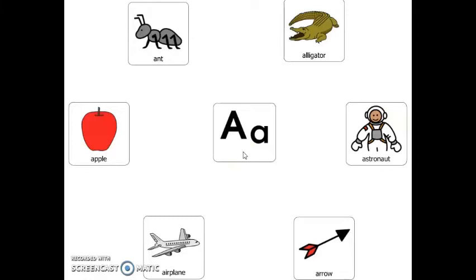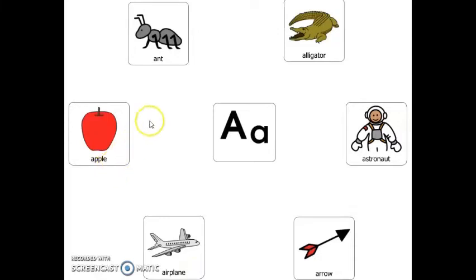Here are six pictures that start with the letter A. You can say them after me. Alligator. Astronaut. Arrow. Airplane. Apple. An ant.